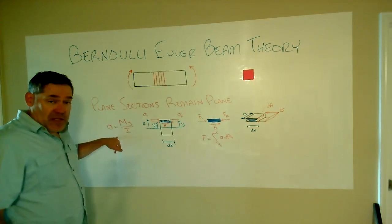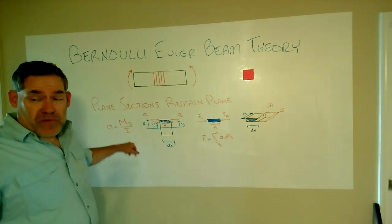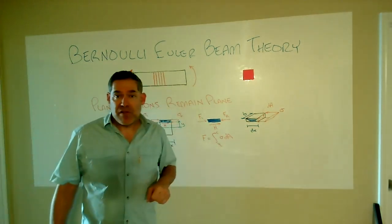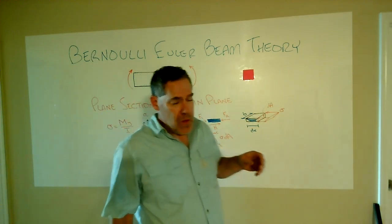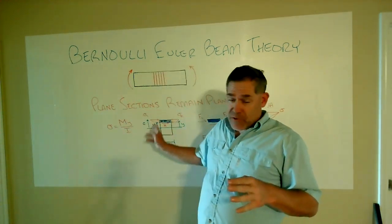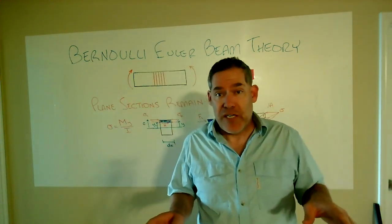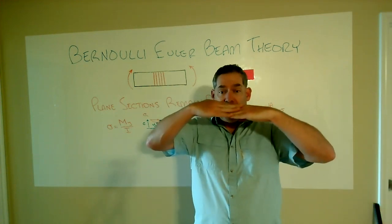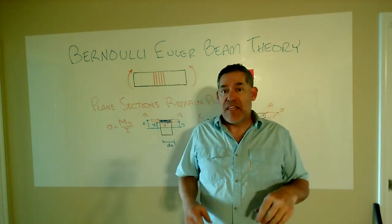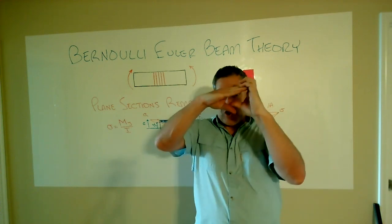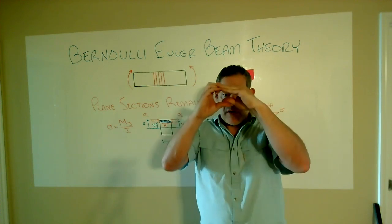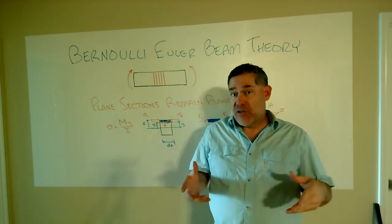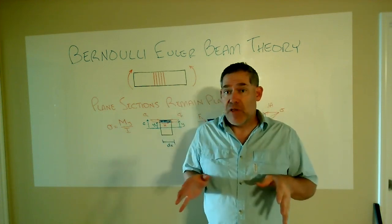It's kind of an interesting thing. And we go back to sigma equals My over I, the plane sections remain plane business. What we could have also said here is that there's no shearing deformations, which is kind of a strange thing. No shearing deformations, that would be those plies going back and forth, taking that rectangle and skewing it one way or the other. That's a shearing type deformation, and we're going to ignore that.